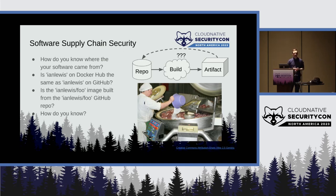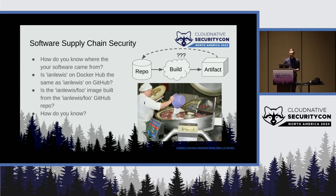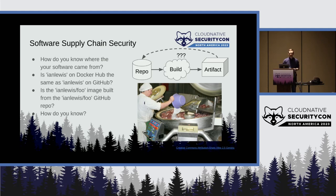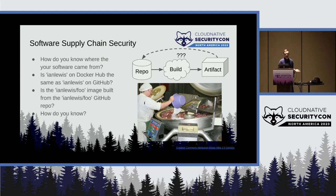This is even worse when software is being distributed on a totally different platform — for example, Docker Hub, or GCR, or other container registries. For example, is the Ian Lewis on Docker Hub the same Ian Lewis as the Ian Lewis on GitHub? There's no real linkage there that you can verify. We won't actually solve that particular problem today, but it's one of the root problems. Also, is the actual image — say, Ian Lewis Foo on Docker Hub — built from the source code that's in the Ian Lewis Foo repository on GitHub? How can you verify that?